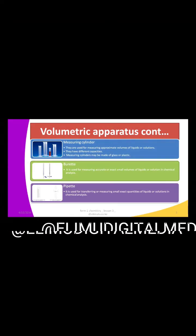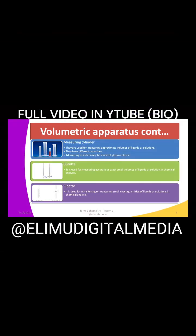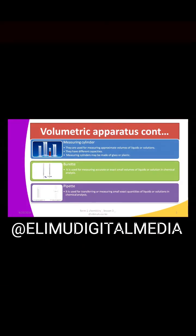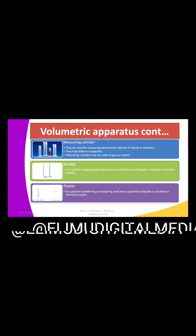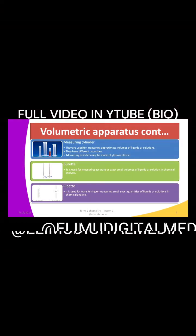The next apparatus is a burette. A burette is used for measuring accurate or exact volumes of solutions in chemical analysis. A burette is used to measure small volumes that are meant for chemical analysis. A good example of chemical analysis is a titration — if you are conducting a titration, you will use a burette to measure those small, exact volumes that are used.